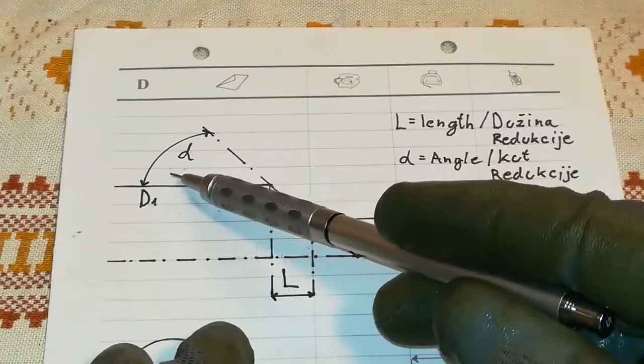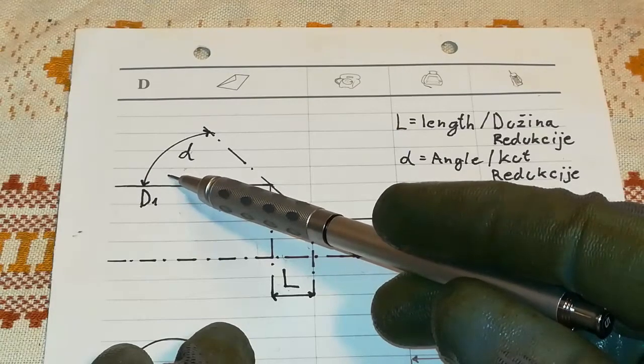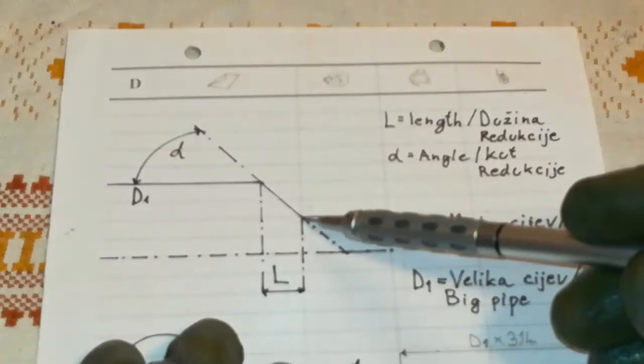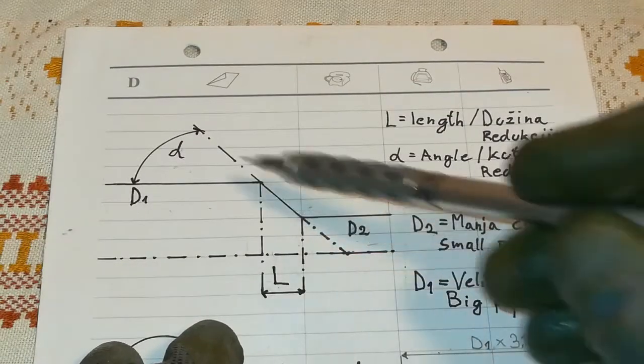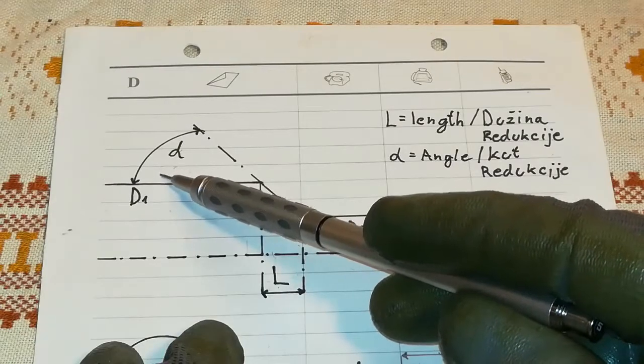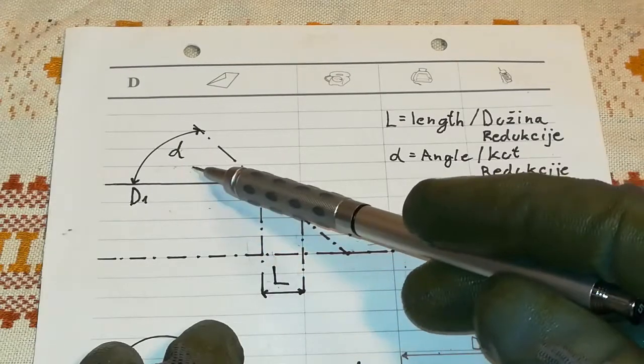For calculation, we're going to use half the angle. For example, if you want to make a 30 degrees reduction, in this case, you're going to use half, so that's 15 degrees while calculating.